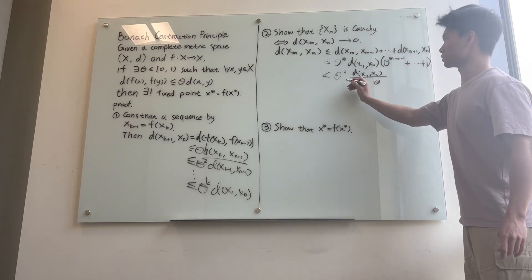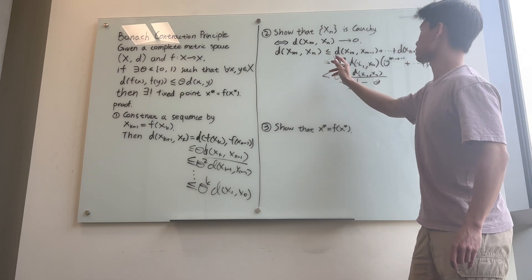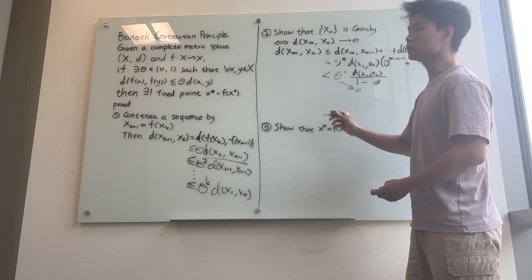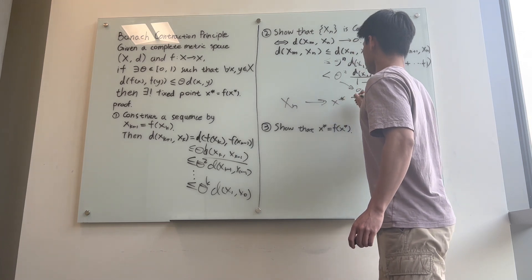And this term here is a constant, and this term goes to 0. And so d(x_m, x_n) goes to 0, and this sequence is Cauchy. Since the sequence is Cauchy, it converges to a point x* in X.